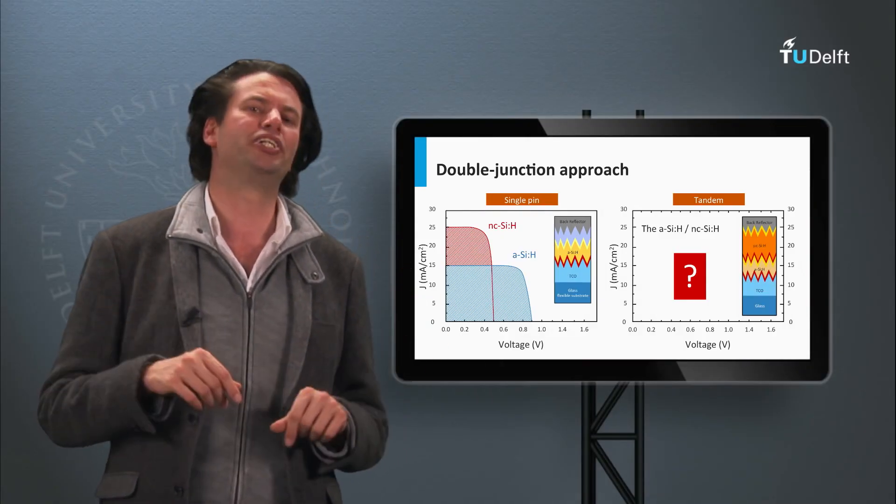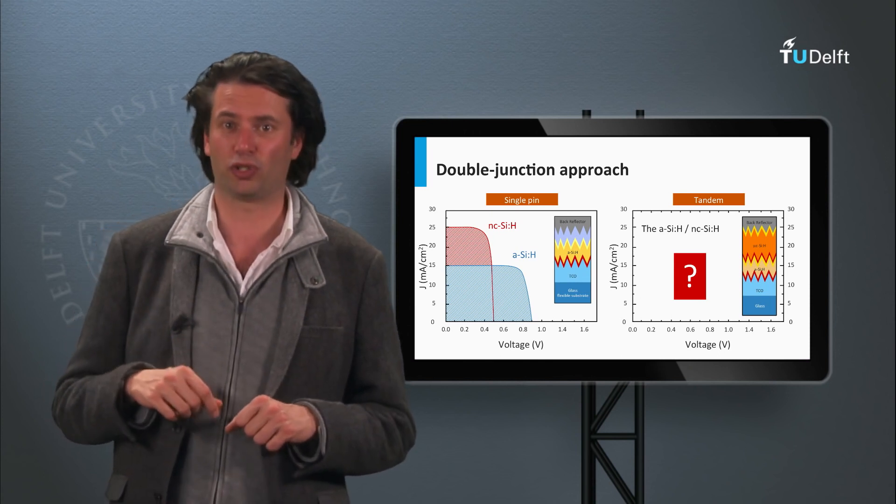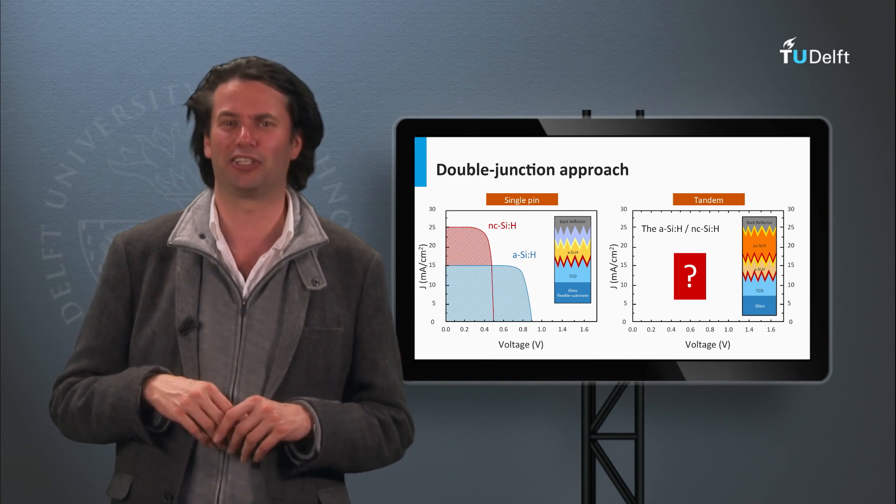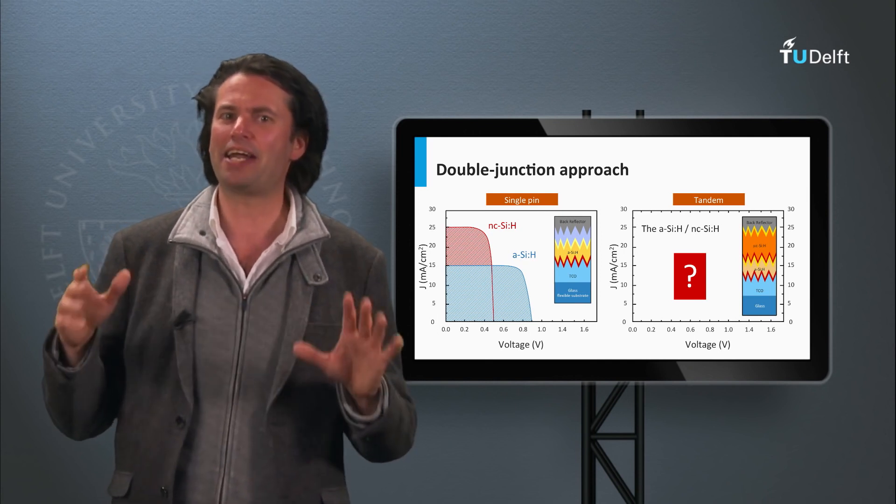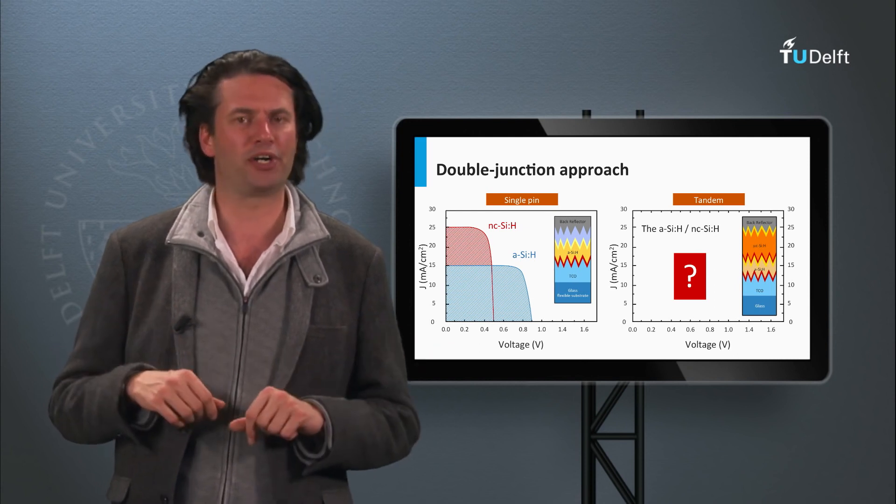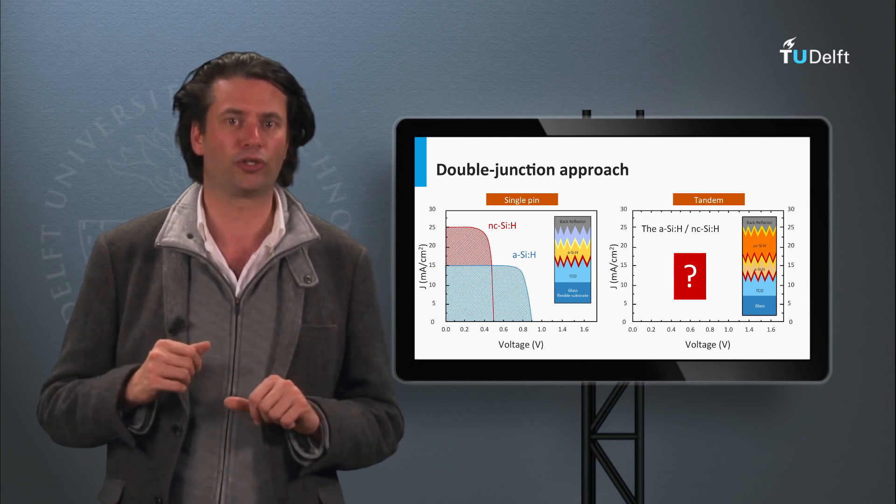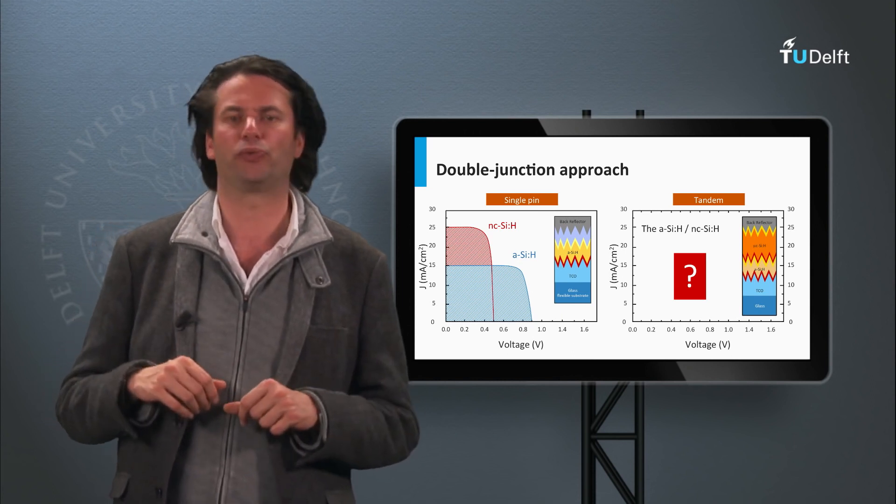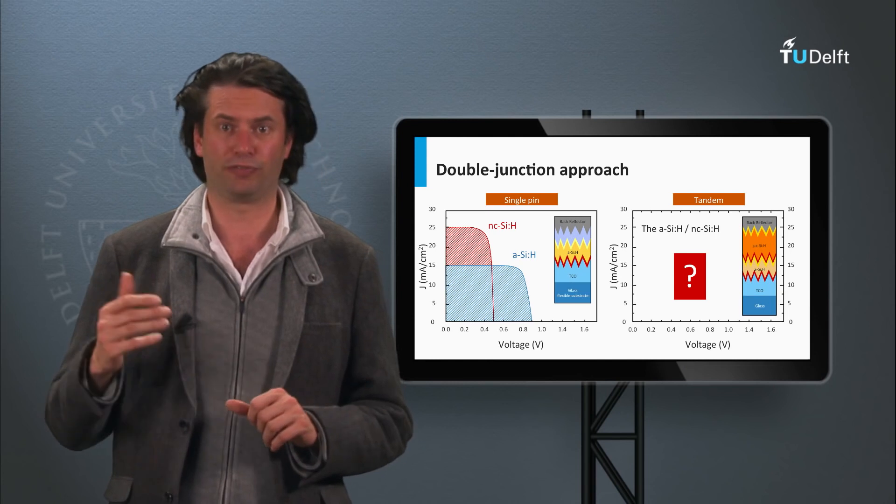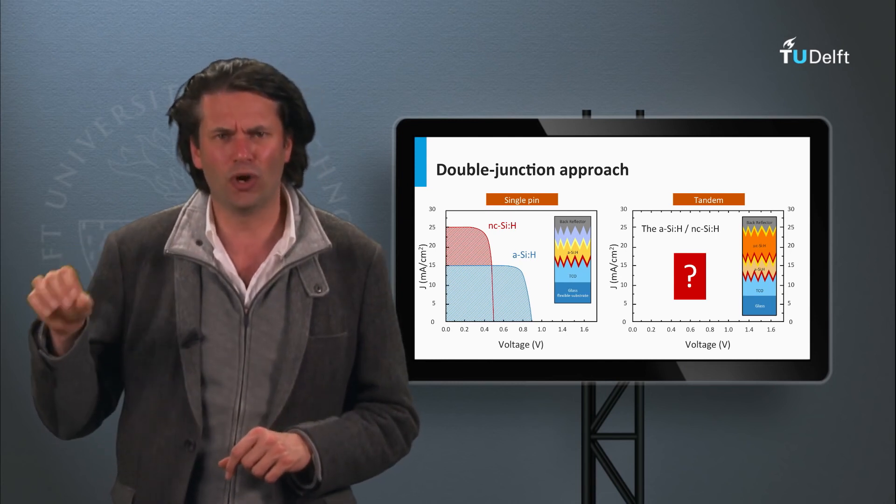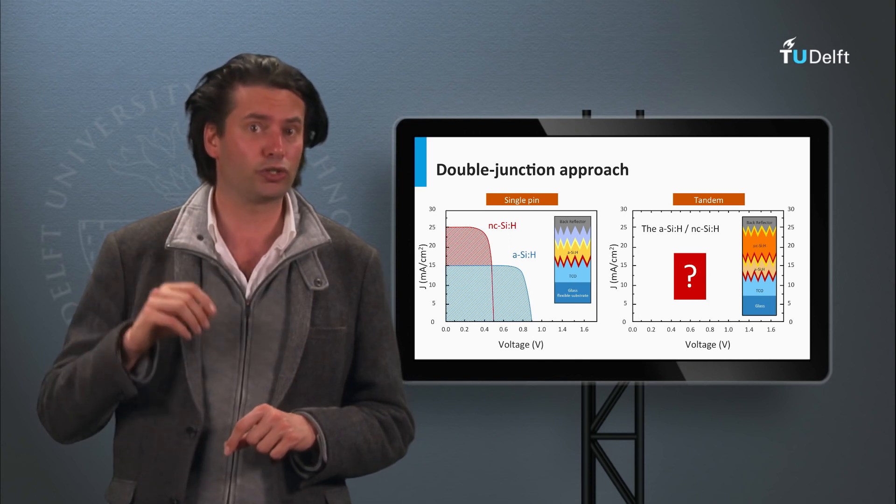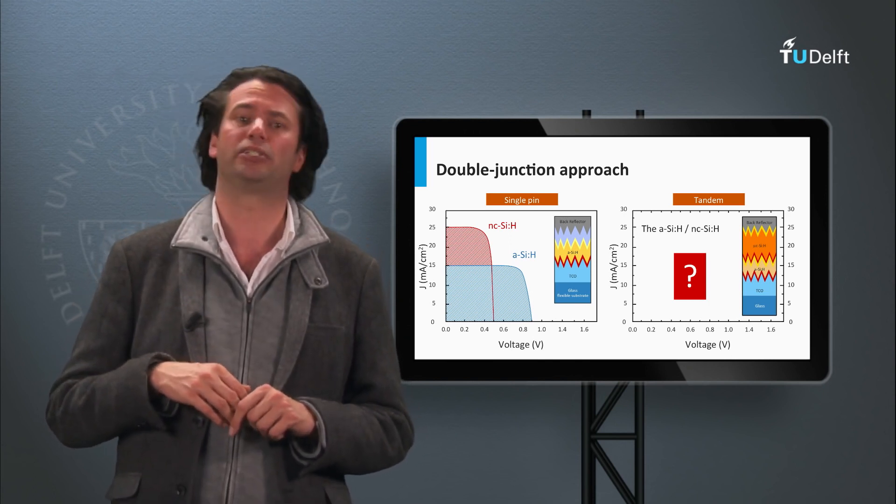Let's look at the JV curves of a single junction amorphous silicon solar cell and that of a single junction nanocrystalline silicon solar cell. The high bandgap amorphous silicon has a high open-circuit voltage of, let's say, 0.9 V and a relatively low short-circuit current density of 50 mA per square centimeter. Whereas the low bandgap material of nanocrystalline silicon has a lower open-circuit voltage of 0.5 V and a higher short-circuit current density of 25 mA per square centimeter.